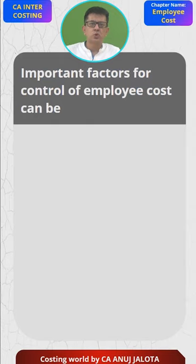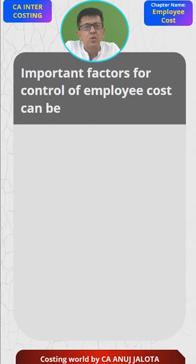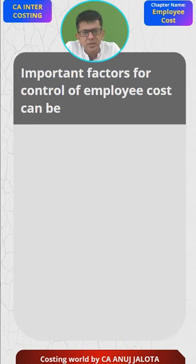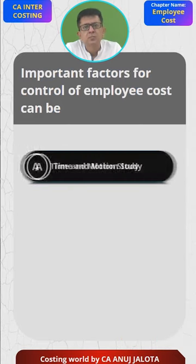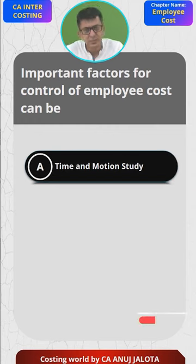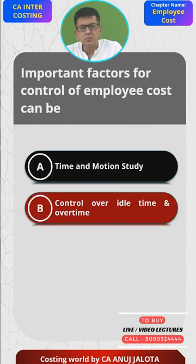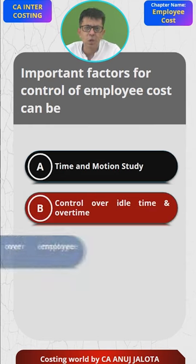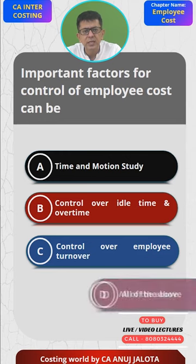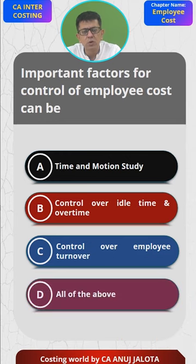Today's question is: what are the important factors for control of employee cost? Option A: time and motion study. Option B: control over idle time and overtime. Option C: control over employee turnover. And D: all of the above.